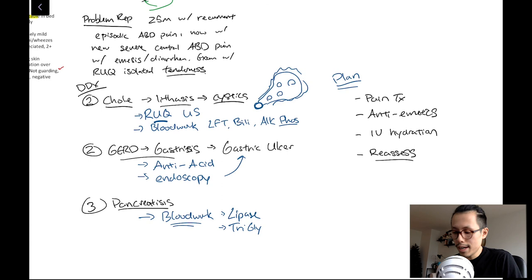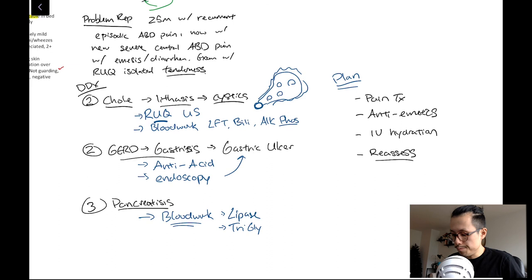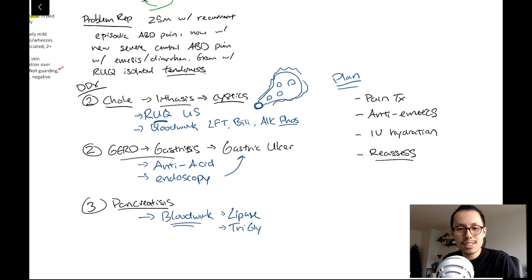This is my personal problem representation and tiered differential. Another clinician might read the same history and physical and reorder things differently — that's all based on clinical experience. But it's good practice as you read cases and meet patients to think about what problems match your findings, what stands out in the history and physical, and from there build a tiered differential and a starting plan. Hopefully you enjoyed this, and if so we can make more videos to cover other topics. Thank you.